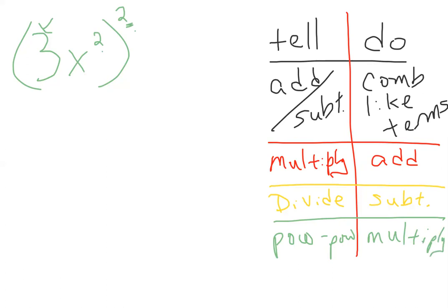So these guys will multiply, but the three is going to actually do the math. So this becomes three squared, x squared squared. So three squared is nine, and this now multiplies, two times two is to the fourth. So three x squared squared is nine x to the fourth.